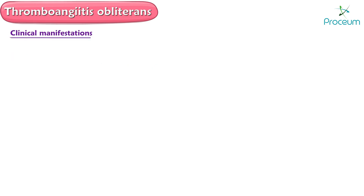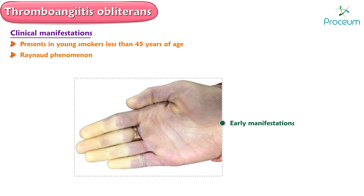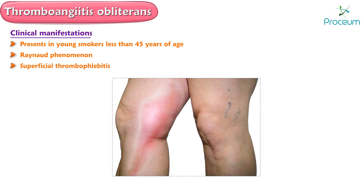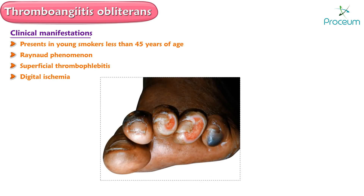In clinical manifestations, thromboangiitis obliterans typically presents in young smokers less than 45 years of age. Early manifestations include cold-induced Raynaud's phenomenon and superficial thrombophlebitis. A migratory, superficial thrombophlebitis can occur as a very early disease manifestation even before other symptoms and signs. Digital ischemia — that is, toe or finger ischemia — is the most common presentation of thromboangiitis obliterans.